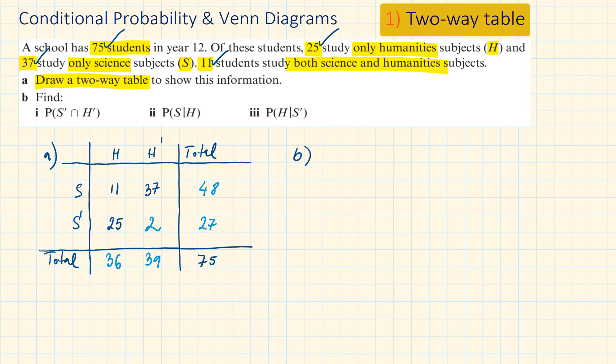Part B. Find the probability of the intersection of the complement of S and complement of H. Or in other words, what is the probability of a student not studying science and not studying humanities? We can see that there are only two students who qualify, so therefore the probability is 2 out of 75.